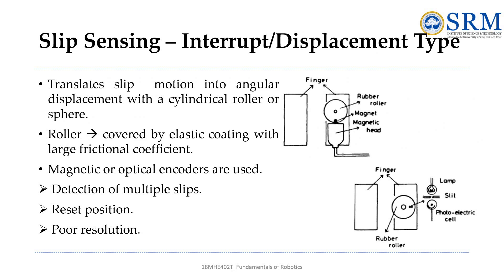The second type is the interruptor displacement type. It works by turning slipping movements into a twisting motion using a roller or a sphere. The roller is wrapped in a stretchy material with a good grip. Magnetic or optical sensors are used to detect when it slips. This setup can catch multiple slips and can reset its position, but may not be very precise in detecting small movements.